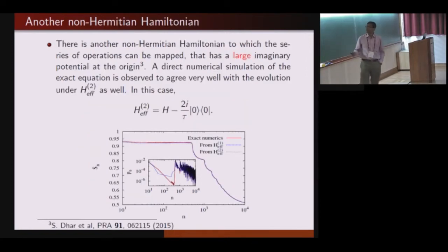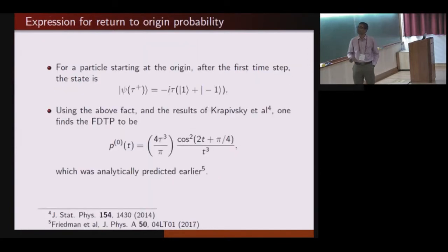It turns out there is one more Hamiltonian that does the same job. In this case, this is more agreeable to our intuitions. The entire lattice is there. Origin is not removed. However, in place of the detector, we are placing an imaginary potential at the origin. This also mimics the effect of the detector. And again, the result of evolution under this effective Hamiltonian agrees to a very good accuracy with the exact simulation.